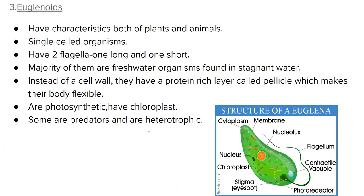The third organism is euglenoids. Euglenoids are protists which show characters of both plants and animals. They are all unicellular and also have two flagella — one flagellum is very short and one is very long. The majority are freshwater organisms, usually found in stagnant water. Instead of a cell wall, they have a proteinaceous covering around the plasma membrane called a pellicle, making their body very flexible. They are all photosynthetic and contain chloroplasts, but some members are predators and heterotrophic.